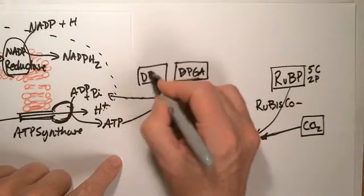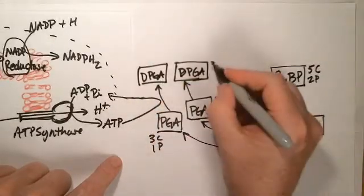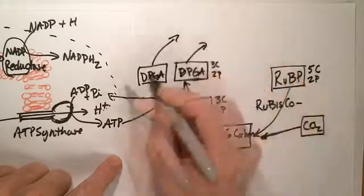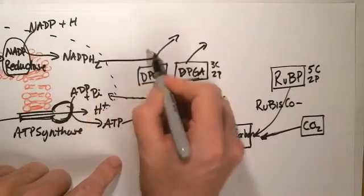So DPGA. Three carbons, now two phosphates. This molecule will also get acted upon again by NADPH. And NADPH,